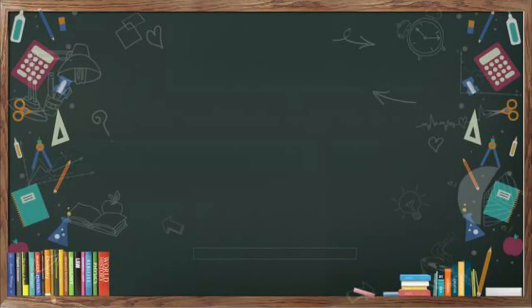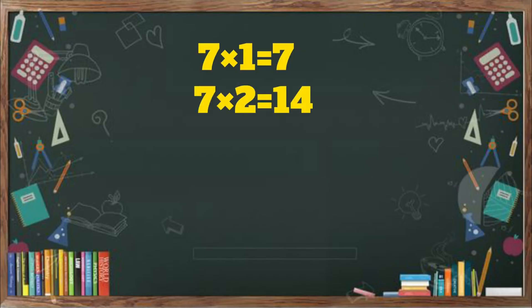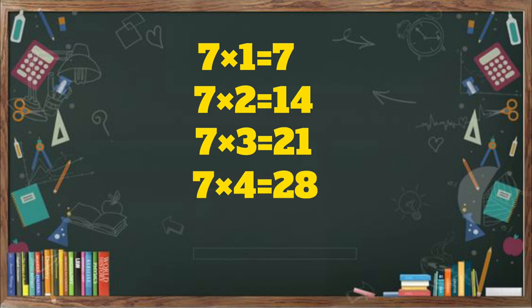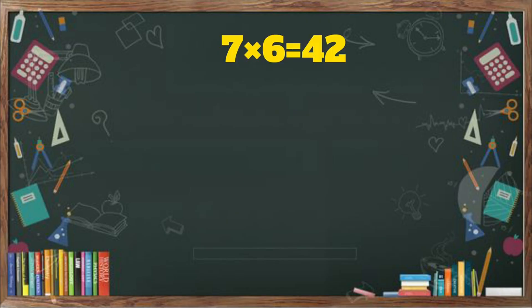7 1s are 7. 7 2s are 14. 7 3s are 21. 7 4s are 28. 7 5s are 35. 7 6 are 42.